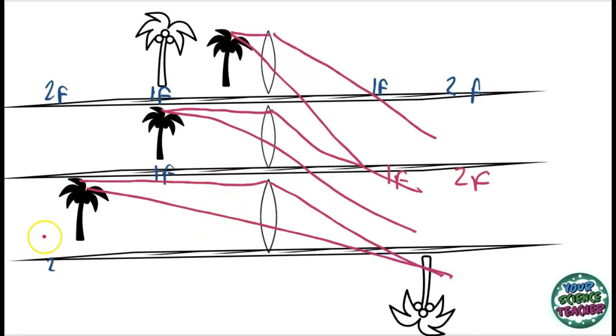And if it's further than two focal lengths away, in fact, if it's two focal lengths away, it will be exactly the same length, size and inverted. And if it's further than two focal lengths away, it will be inverted and smaller.